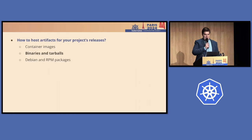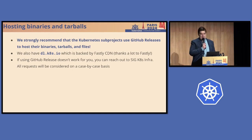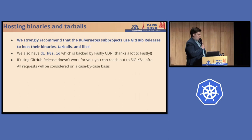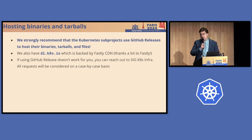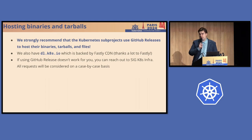That covers container images. For binaries and tarballs, we strongly recommend that Kubernetes subprojects use GitHub releases to host binaries, tarballs, and files. There are many reasons for that — this is the recommended way at the moment. We also have dl.k8s.io, backed by Fastly CDN — thanks to them for their generous donation and support. But it's not easy to get subprojects onto dl.k8s.io, so GitHub releases is recommended. If that doesn't work for you, you can reach out to SIG Infra and they can handle it on a case-by-case basis.